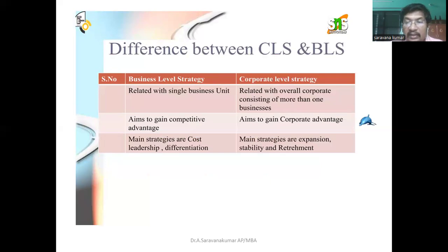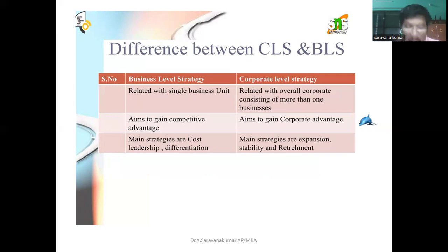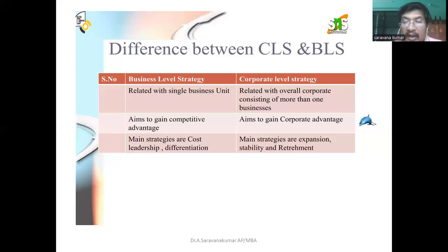What is the difference between corporate level strategy and business level strategy? Business level strategy is related to a single business unit, while corporate level strategy is related to the overall corporate entity with more than one business — for example, Reliance Petroleum, Reliance Telecommunication, and Reliance Departmental Stores. Business level aims to gain competitive advantage with strategies like cost leadership and differentiation. Corporate level aims to gain corporate advantage with strategies like expansion, diversification, stability, and retrenchment.